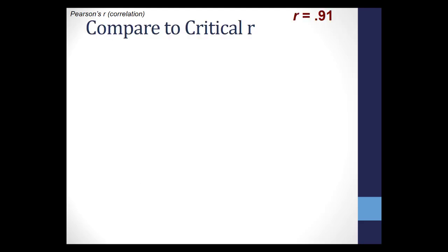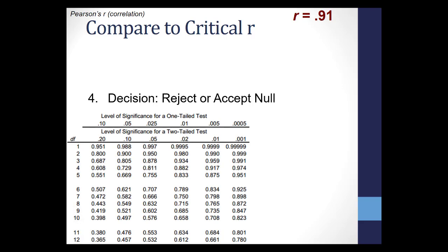Now we have to take the next step to compare our calculated r of 0.91 to determine whether we should accept or reject the null hypothesis. For that, we will need our critical value table for Pearson's r.